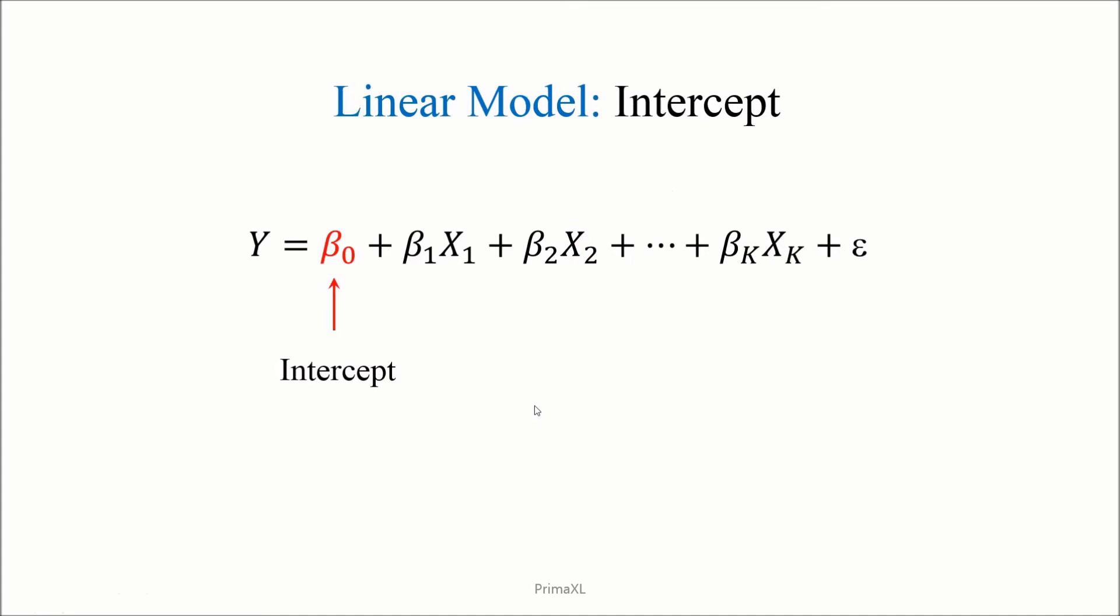The beta 0 is a bit special and has its own name. It is called the intercept. Imagine the situation where all of the x variables have value equal to 0. Then, all these terms would disappear and what remains is the beta 0. The beta 0 gives the baseline value.